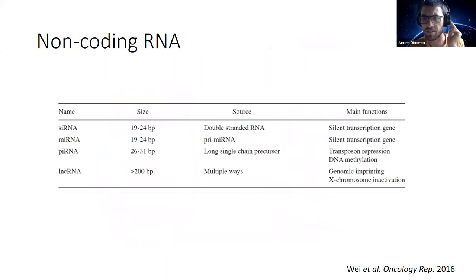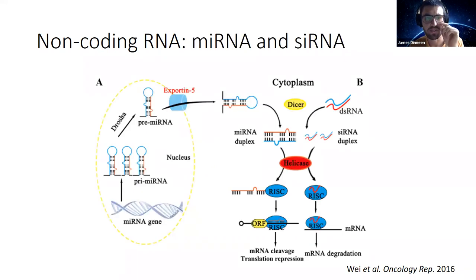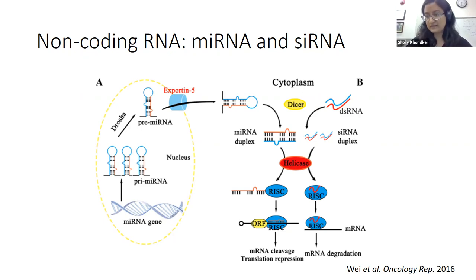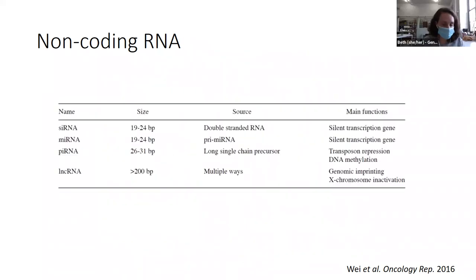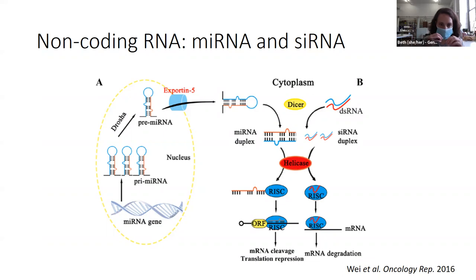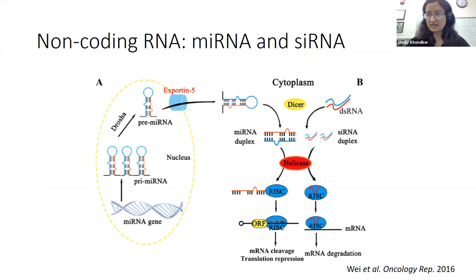To clarify: silencing RNA and microRNA disrupt translation, not transcription, because the mRNA is already present at that point. There is also some evidence that RNA-induced silencing complexes can silence transcription as well.